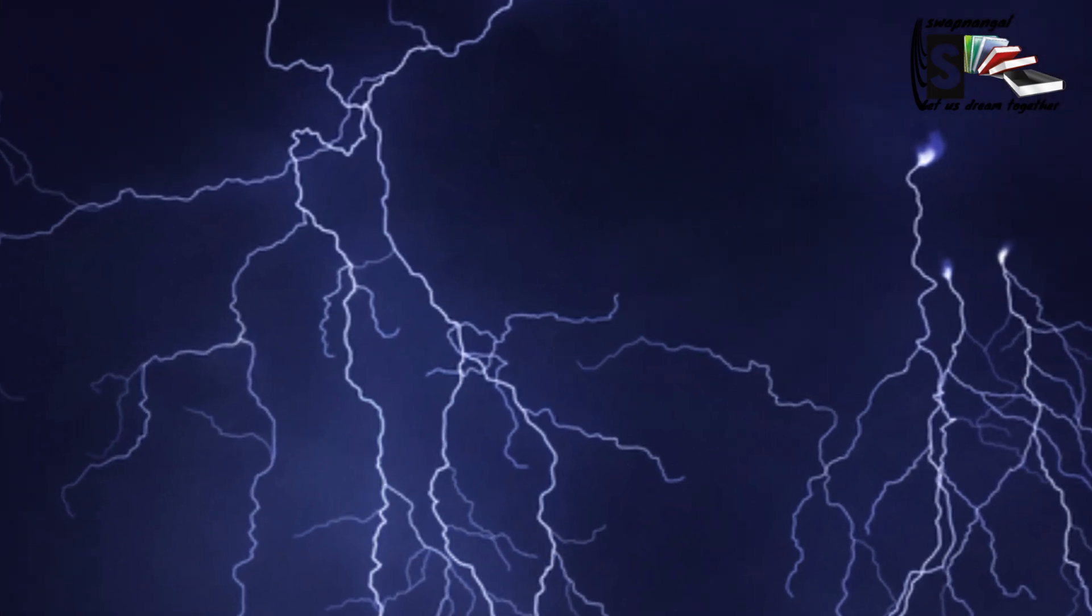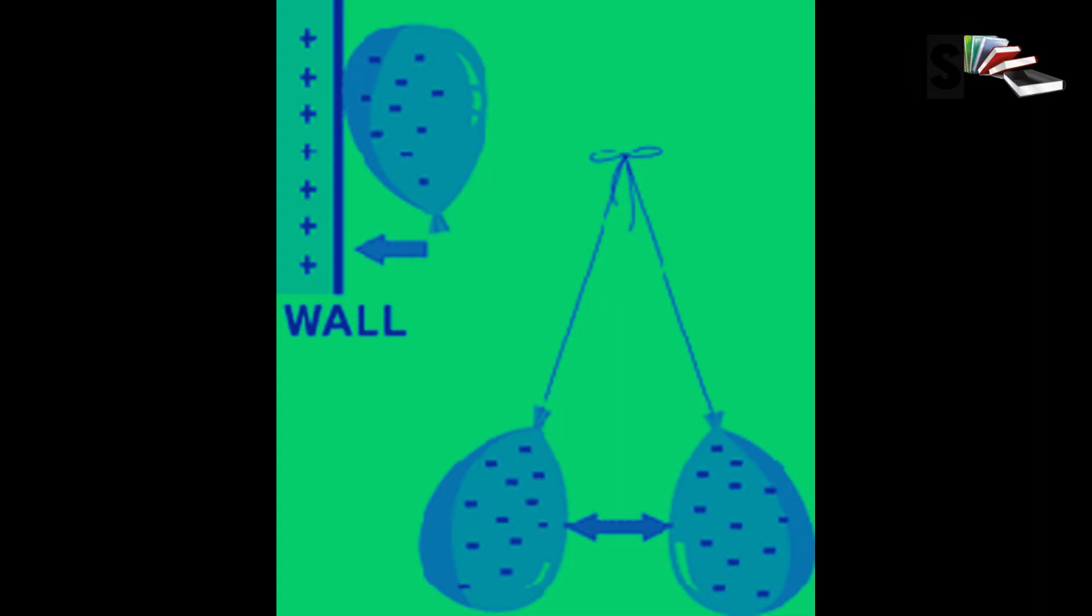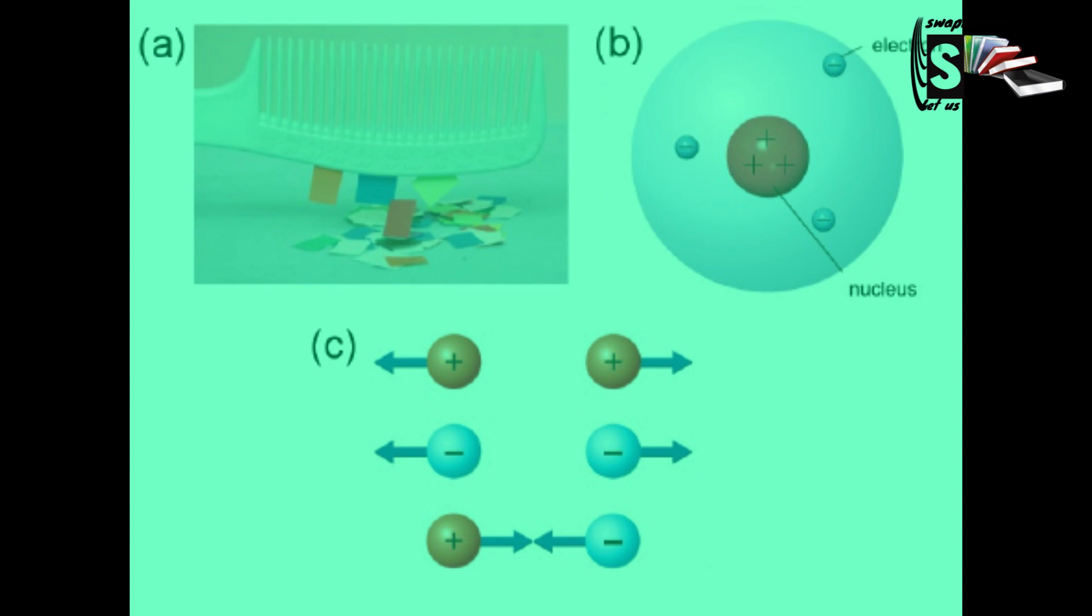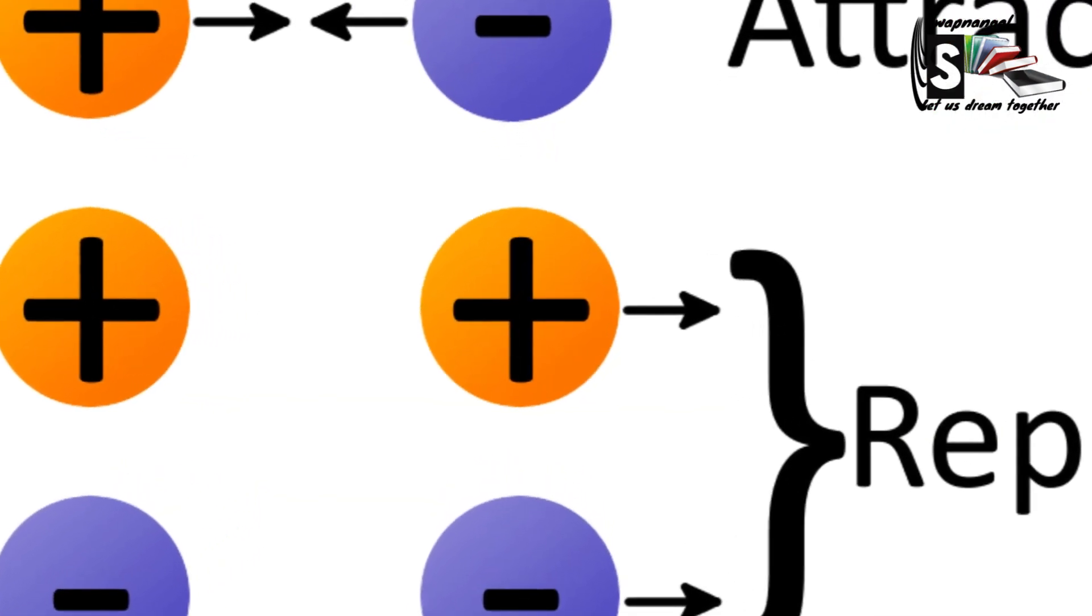This also means that removing electrons in one atom will have more protons and fewer electrons. So then the atom has an overall positive charge. The charge will either attract or repel the object.